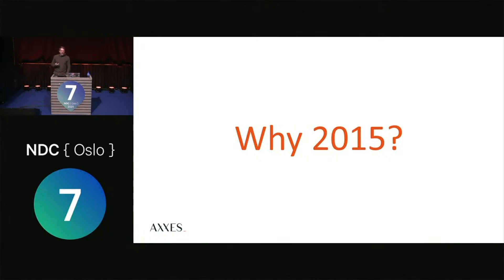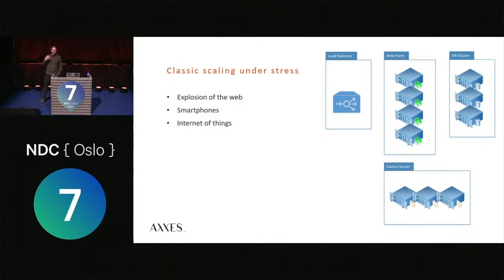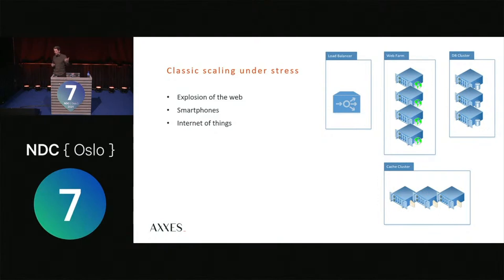It's basically because the free lunch was over. Before that, we could scale in a classical way — add nodes to the web farm, add read nodes to the database cluster, add caching. That worked because processor manufacturers kept putting out faster processors every year and most application user bases didn't grow that much. Then the internet, smartphones, and IoT arrived, and that scaling scenario didn't hold up anymore. That's why we got all these actor models.